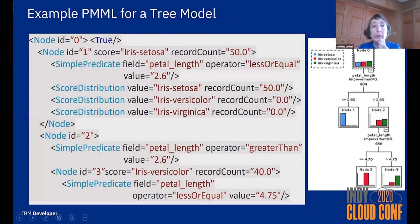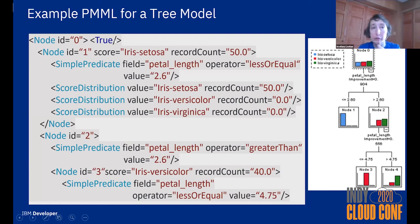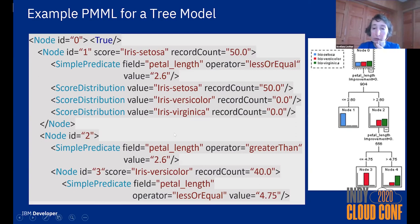Here is an example of PMML for a small decision tree, again built on the same Iris data. The data dictionary is the same as before. The Node element describes the root node, and in each node there is a predicate — for the root it is always true, but for each child there is a predicate describing which cases go to that child. For example, petal length less than or equal to 2.6 goes to the left node, and petal length greater than 2.6 goes to the right, with further child nodes inside.